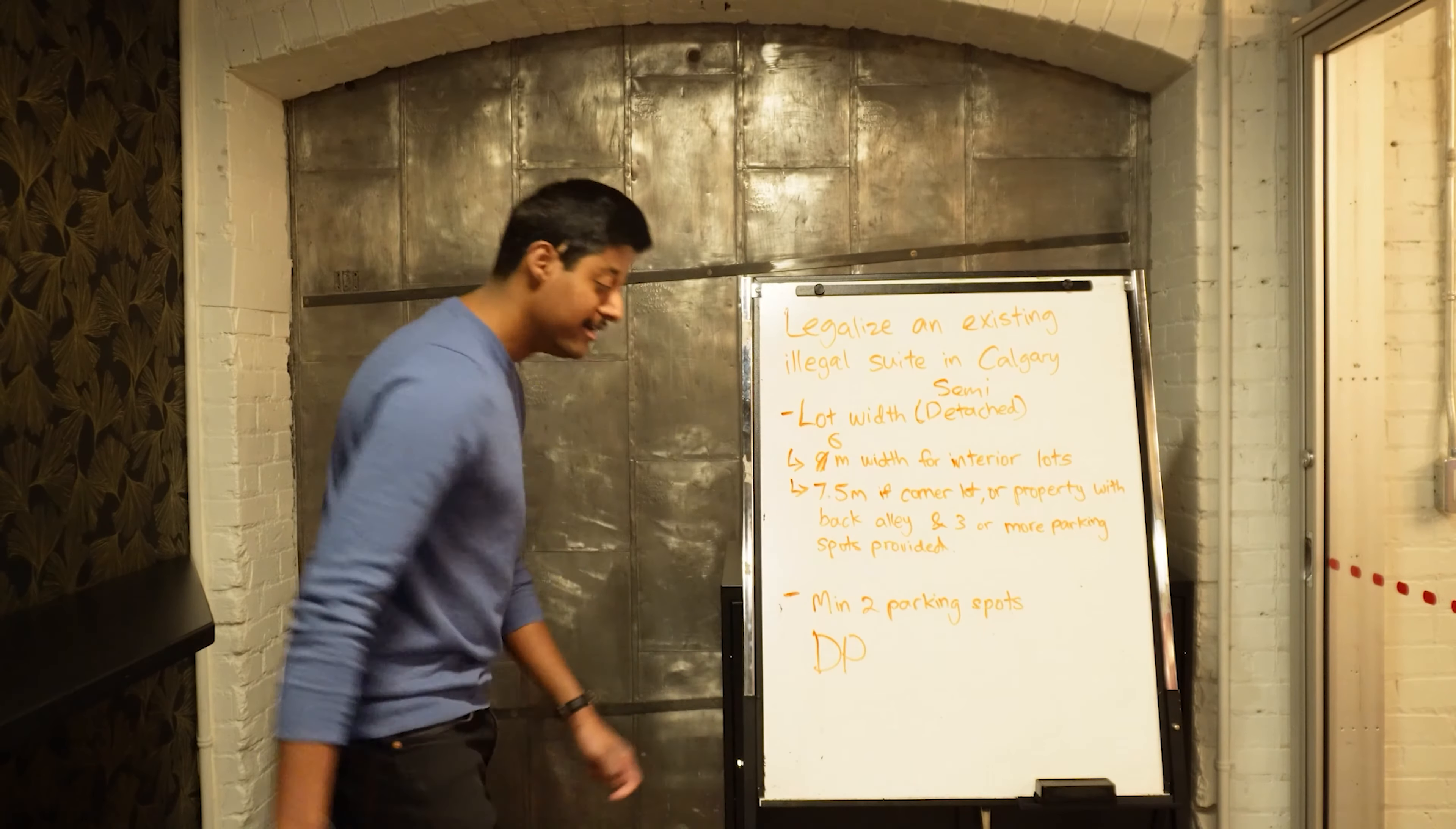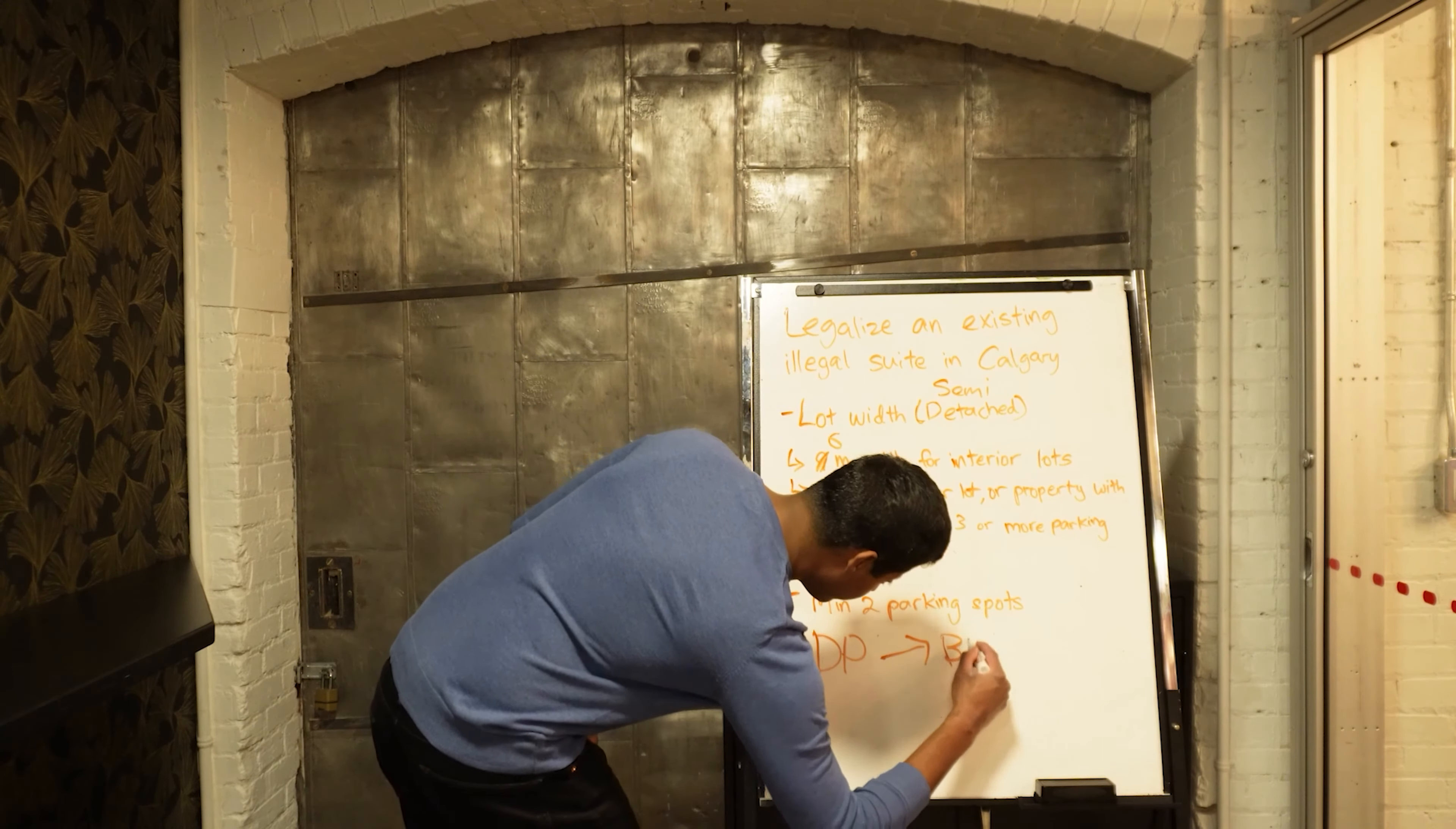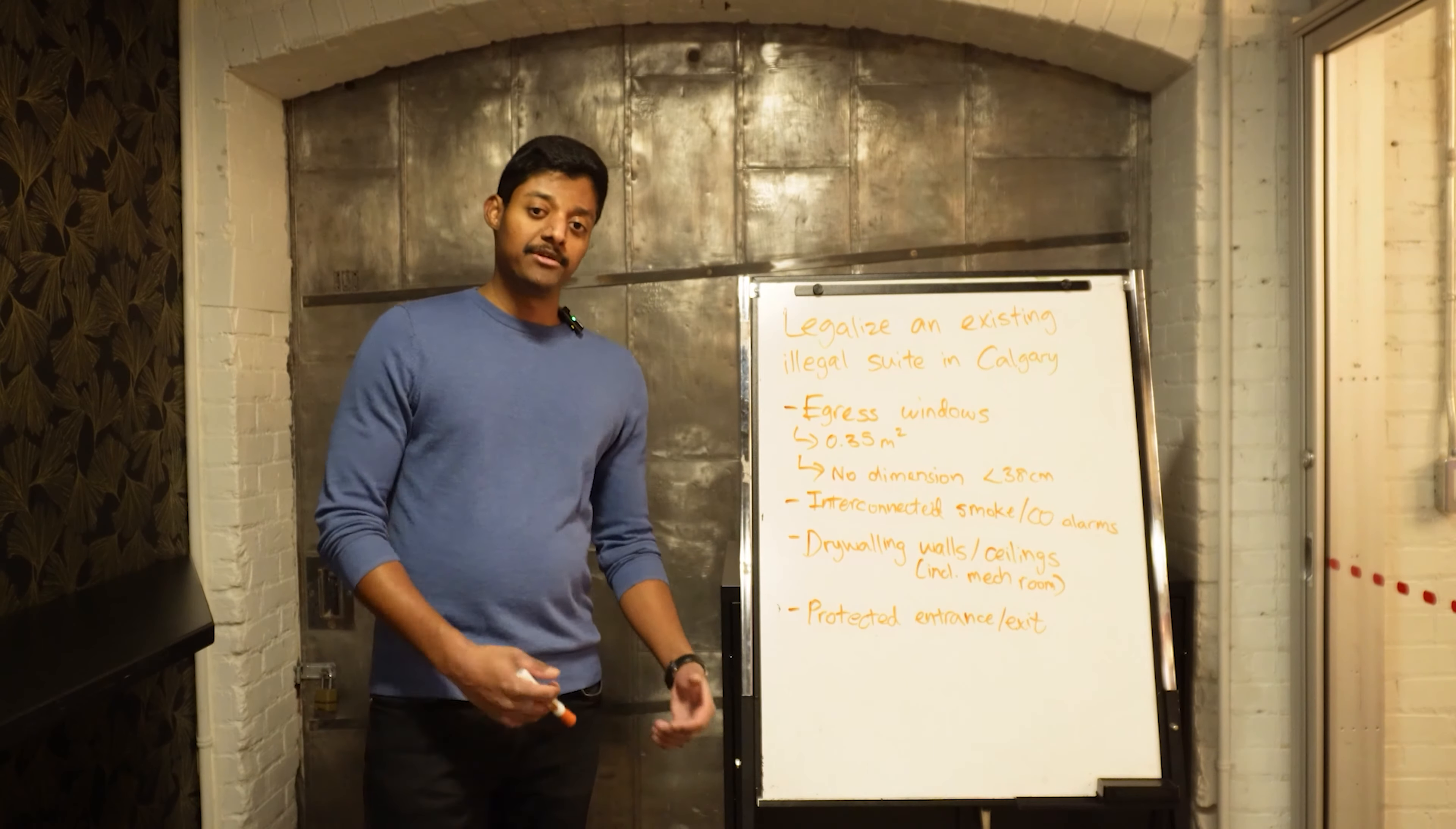The two things that the city is going to require essentially before you start: if you can't meet any of these requirements, you're going to go to a development permit, so we're going to call it a DP. If you can't meet any of these, you're going to apply for a DP, and this would take six to eight weeks to complete. Once you get approval for your DP, you're going to move on to your building permit, which is going to cover all the stuff that you need to do on the interior. Now let's move on to the interior of things.